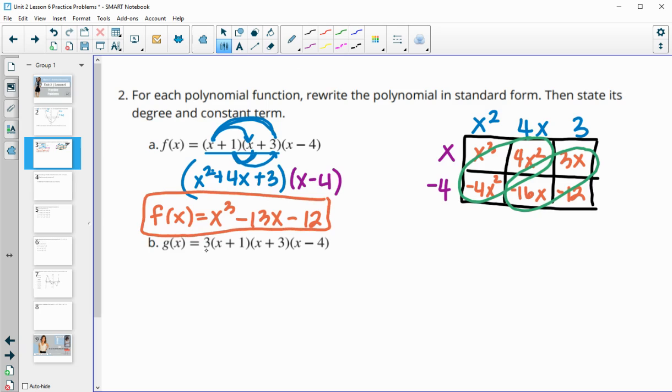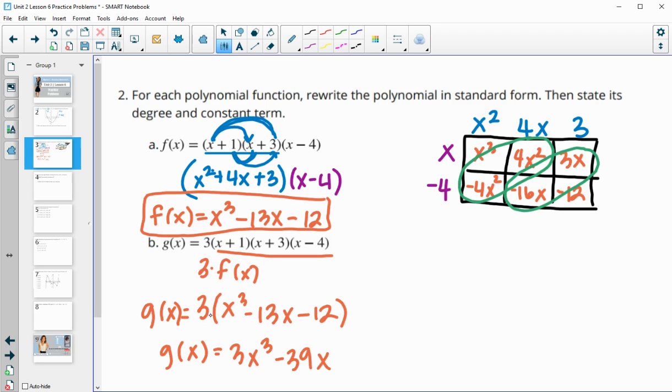Now in part b it asks us to do 3 times the same 3 binomials. So this is really just 3 times our f of x function. So we're just going to do 3 times this function, x cubed minus 13x minus 12. So g of x is equal to 3x cubed. 3 times negative 13 is negative 39x. And then 3 times negative 12 is negative 36.